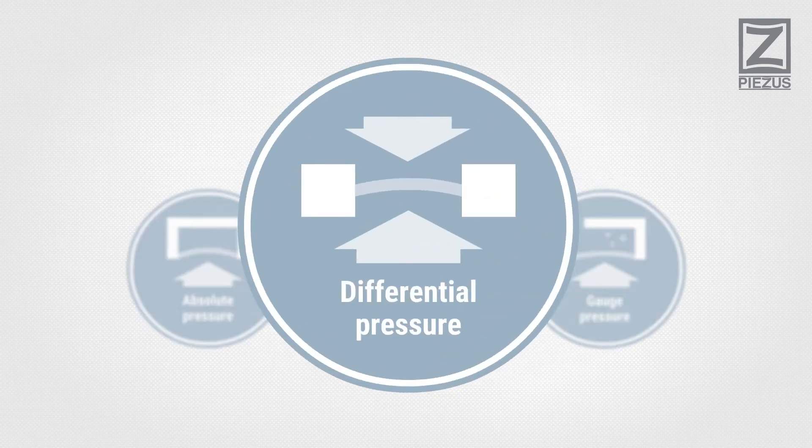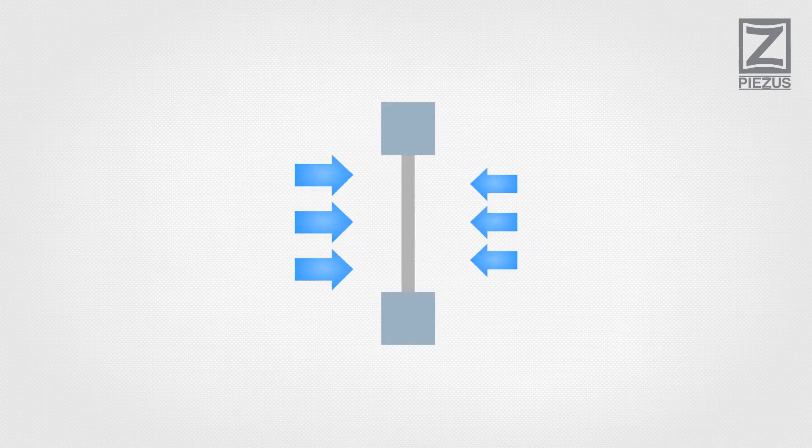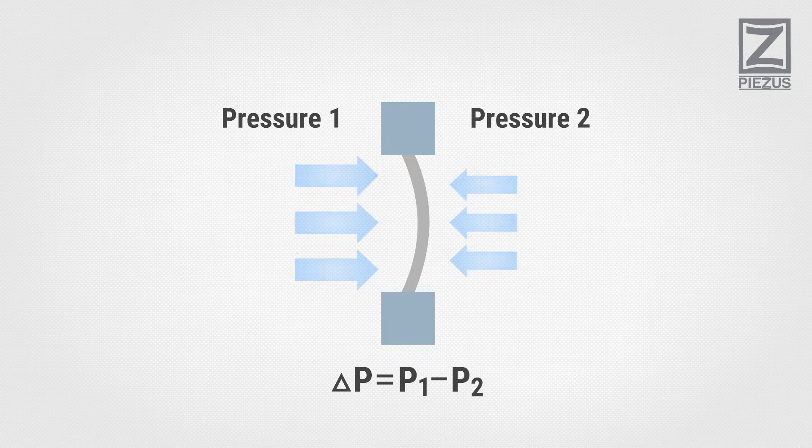Measuring Differential Pressure: Differential pressure is the difference between pressures applied to the opposite sides of the diaphragm.